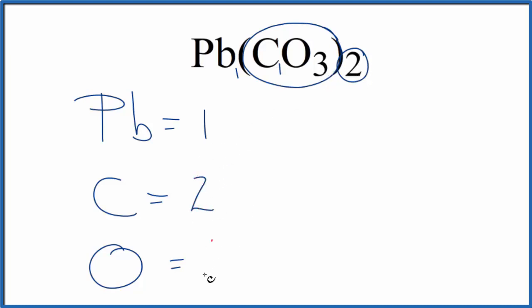Two times three, six oxygen atoms. So if we add this all up, we get a total of nine atoms in Pb(CO3)2, this lead carbonate.